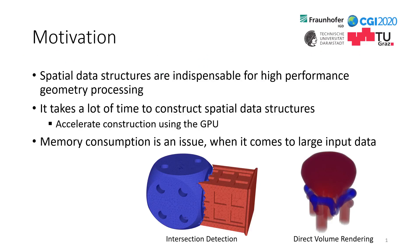First, I explain the motivation. In computer graphics we frequently use spatial data structures such as quadtrees or KD-trees to improve the performance of geometrical calculations. One prominent example is intersection detection. The blue dye mesh intersects with a red TARDIS, which you might know from the TV series Doctor Who. Computing every potential intersection typically is too expensive, so we construct a spatial data structure and exclude the vast majority of intersections.